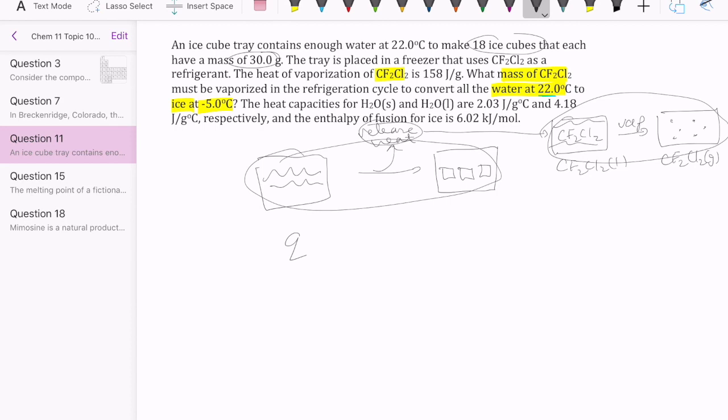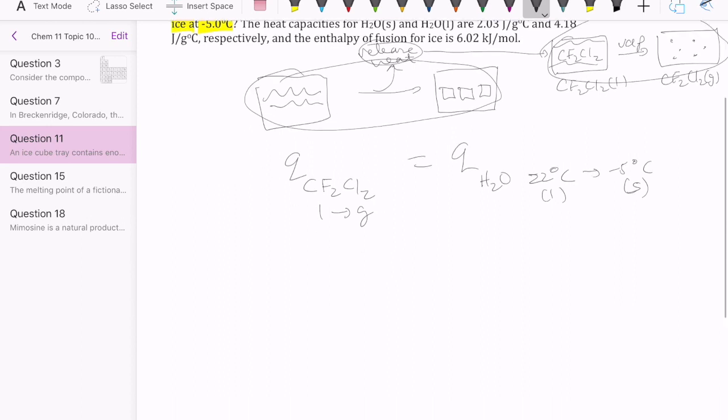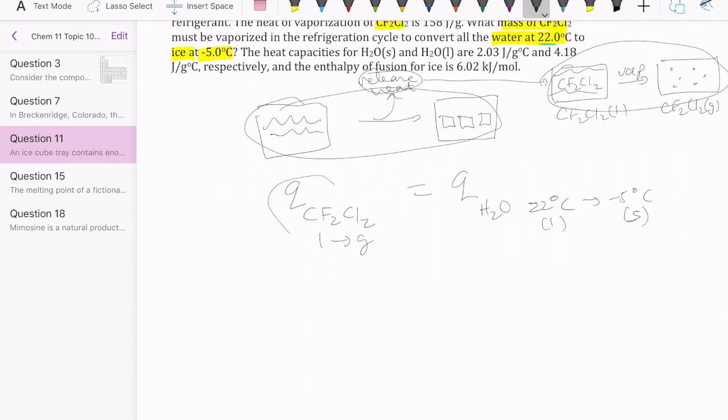So as we said, the heat that's needed to evaporate the CF2Cl2, so convert it from liquid to gas, is going to be equal to the heat that's needed to convert water from 22 degrees to negative 5 degrees. This is liquid, and this is ice, so it's solid. So what we need to do in order to figure out how much mass of CF2Cl2 we need is to first figure out how much this heat quantity is, this Q.